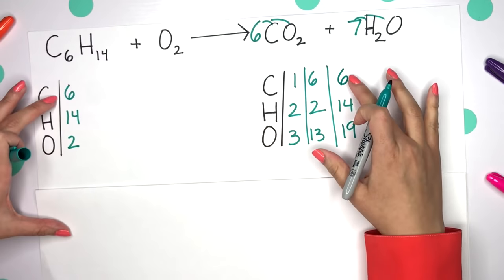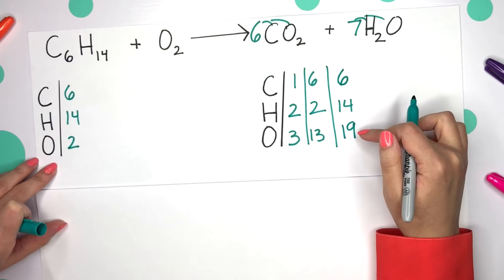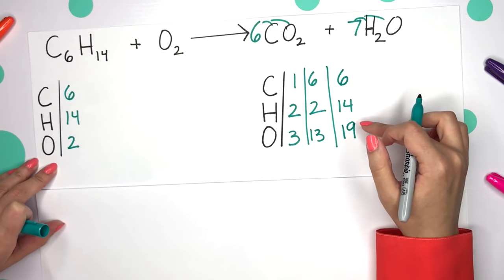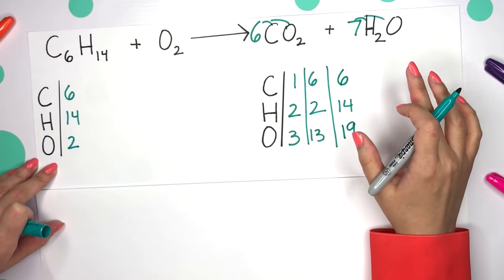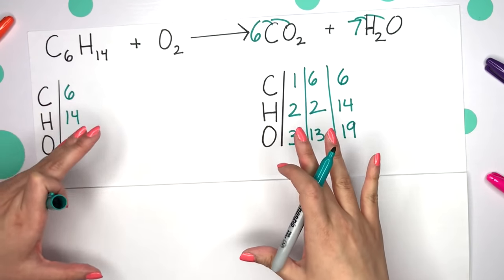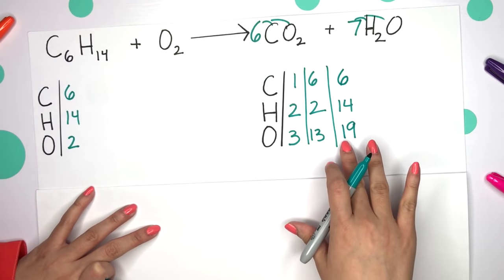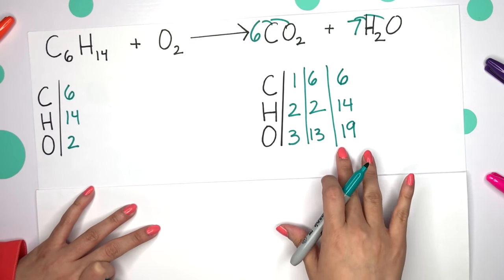So everything else is fine, except no matter what we do, there's always going to be an odd amount of oxygen on our product side. So that's how you know you're going to use a fraction. Whenever there is a time where oxygen or something else is always going to be an odd amount, that's when you use a fraction.